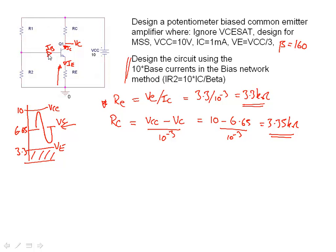Well, we know that value: IB is equal to IC over beta. Now this method is very simple. It basically says down here we need 10 base currents.